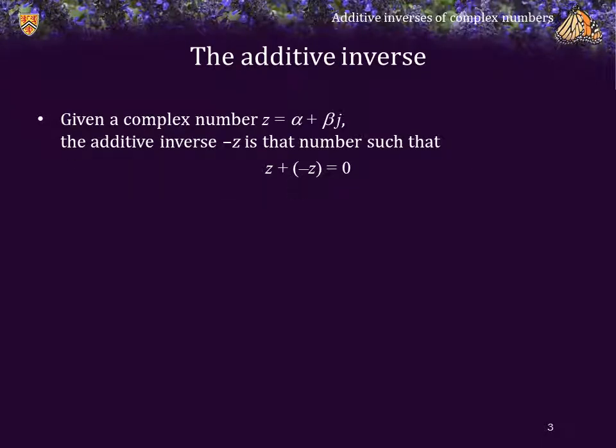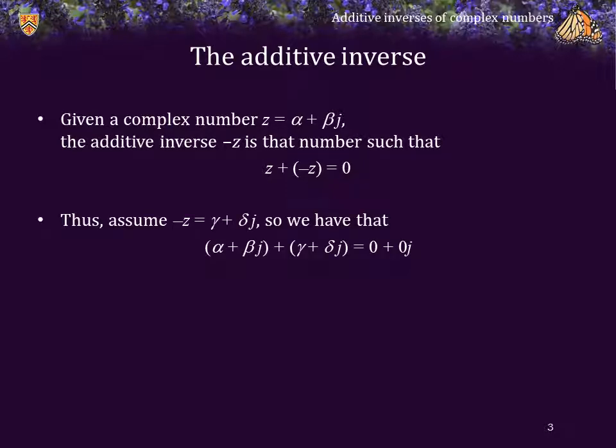Given a complex number z is equal to alpha plus beta j, the additive inverse negative z must be that number such that z plus its additive inverse is equal to zero. Thus, assume that negative z is equal to gamma plus delta j, so we have that alpha plus beta j plus gamma plus delta j is equal to zero plus zero j. That is, alpha plus gamma plus the sum beta plus delta times j must equal zero.